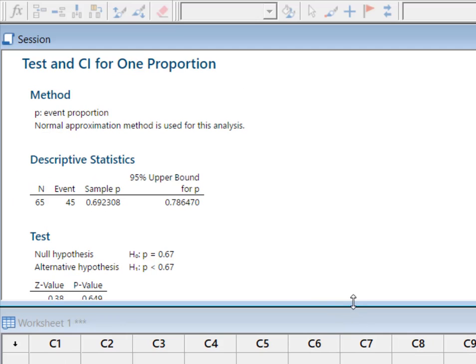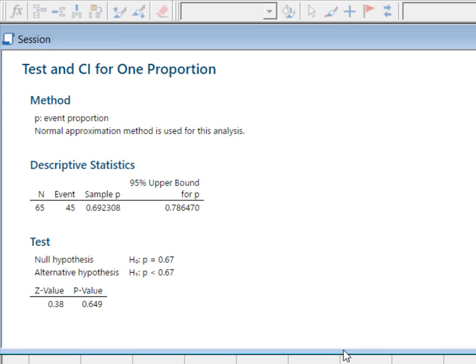Minitab has given us our descriptive statistics, but what we're interested in is where we ran our test of the null at 67%, alternative at less than. What we're after is this z value right here. Our z value is 0.38, and we're going to use that to finish up this test.